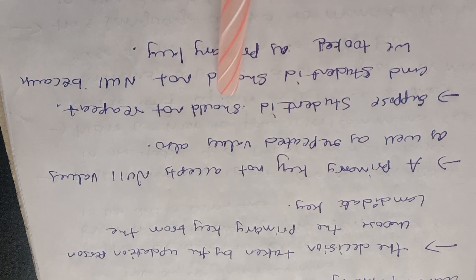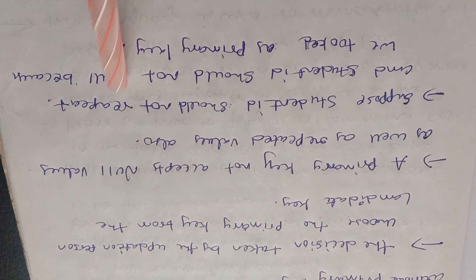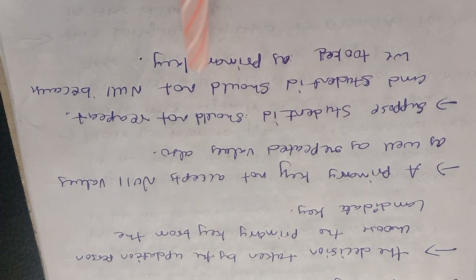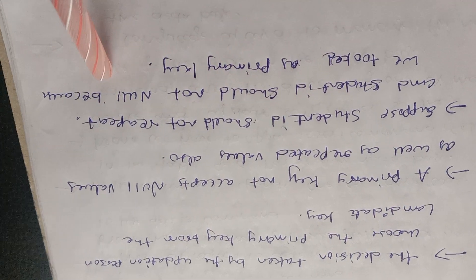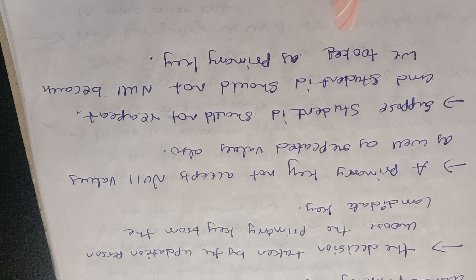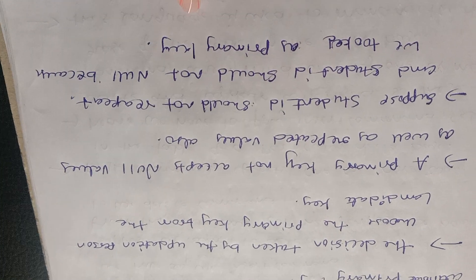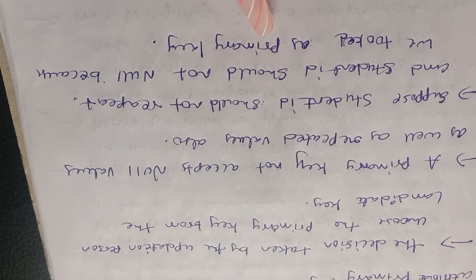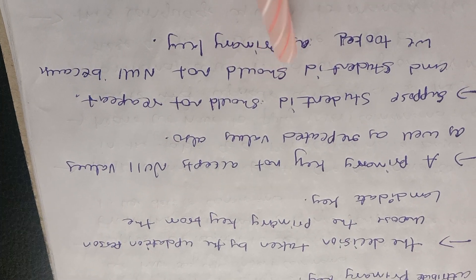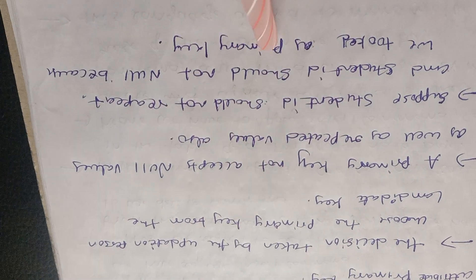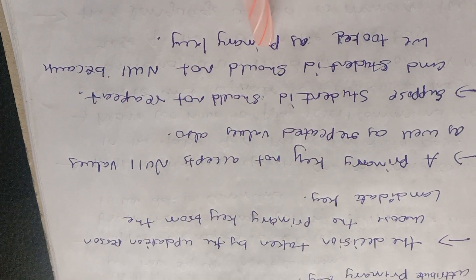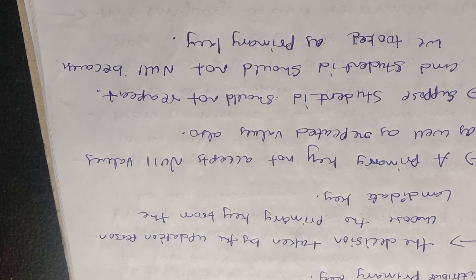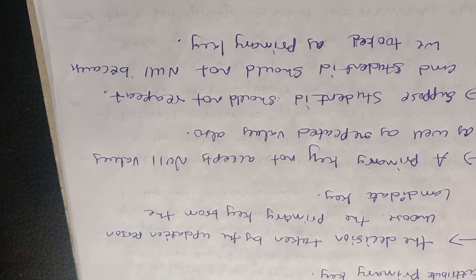Student ID should not repeat and student ID should not have a null value. Since we selected it as the primary key, student ID must always be unique and non-null. This is the role number — thank you.